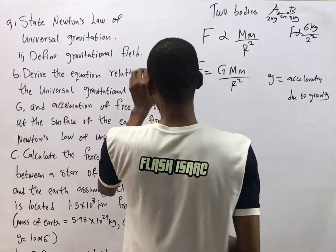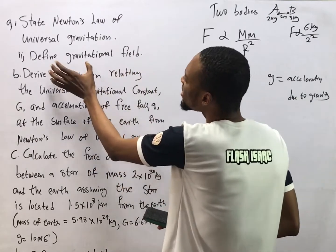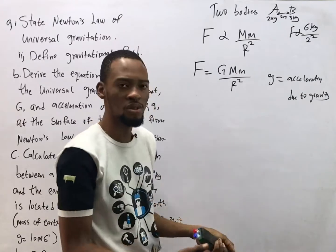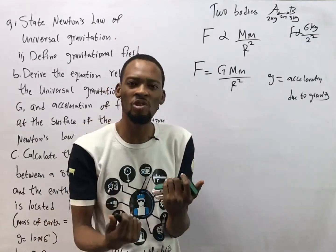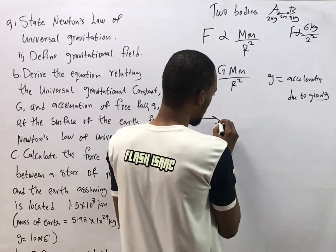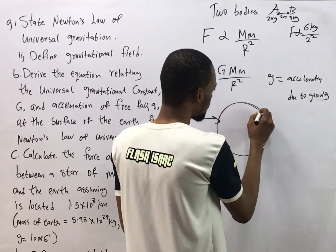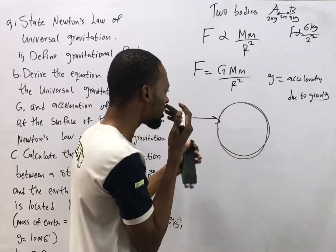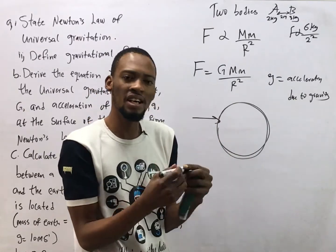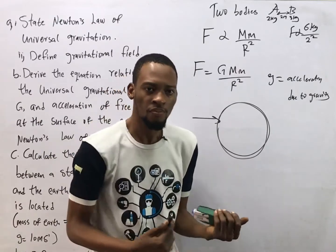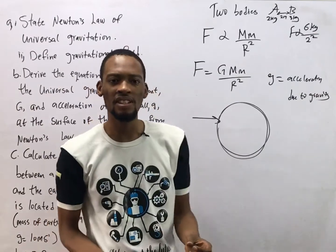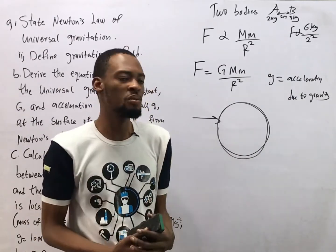The second question says: define gravitational field. A gravitational field is any region or space where gravitational force is experienced. The region in which the gravitational force is experienced is the gravitational field — just like an electric field is the region where electric force is experienced.